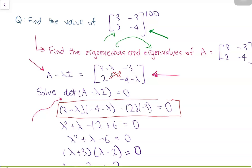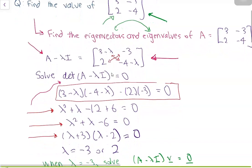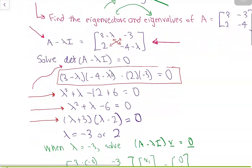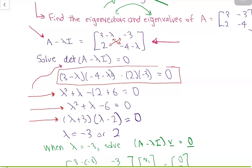Expanding this out, we get lambda² + lambda - 6 = 0. This factorizes as (lambda + 3)(lambda - 2) = 0, which gives us our two eigenvalues: lambda = -3 and lambda = 2.